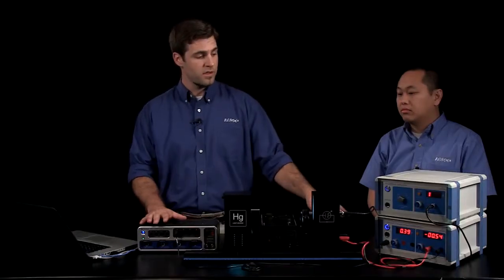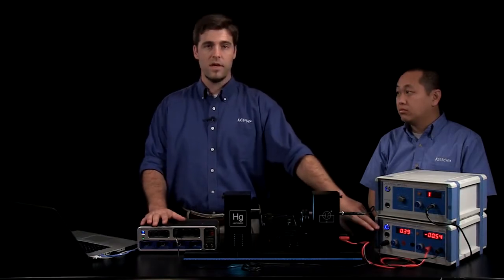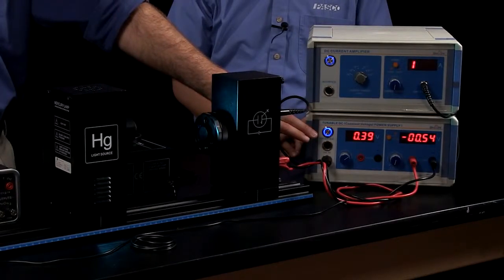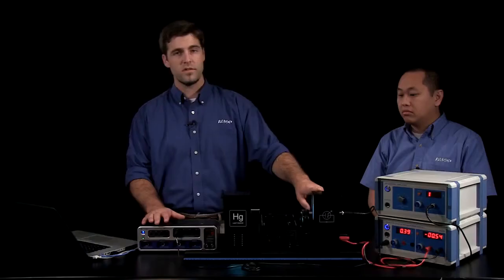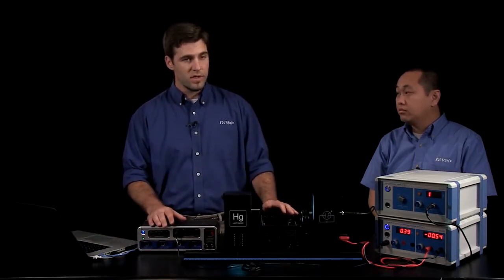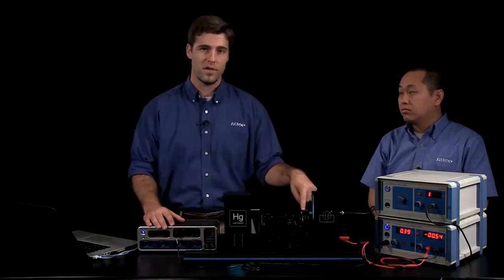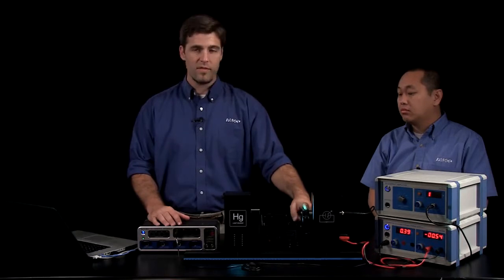So what we're going to do instead is we're going to use a DC voltage power supply here to provide what's called a stopping potential across that anode cathode. And in doing so what we're doing is we're preventing those electrons from being ejected and we're going to assume that the energy or the kinetic energy of those electrons had they been ejected is going to be equal to that stopping potential voltage multiplied by the charge of the electron. So we're going to do that at several different wavelengths of light.